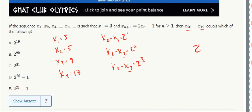So x of 20 minus x of 19 is 2 to the 19. Okay, that subscript is very important. That tells us.